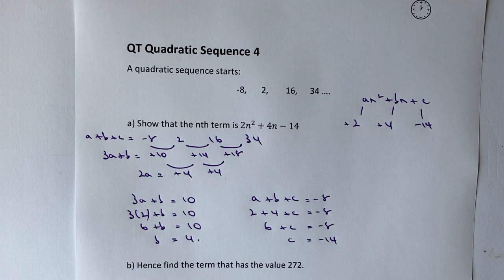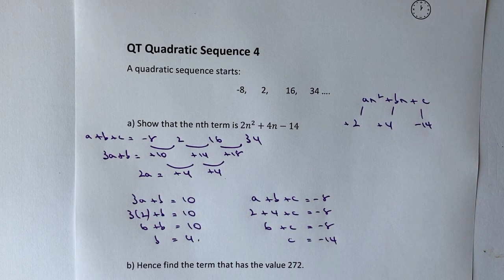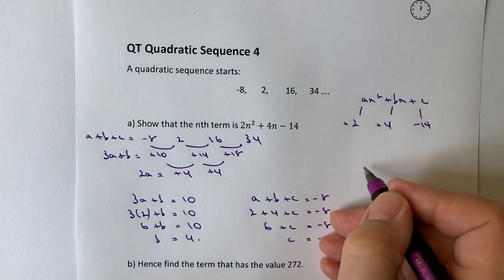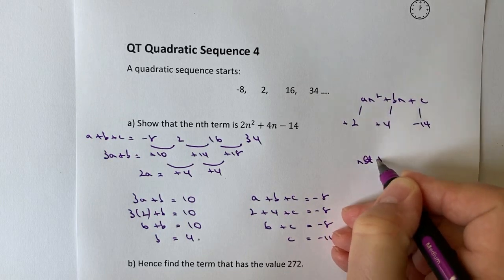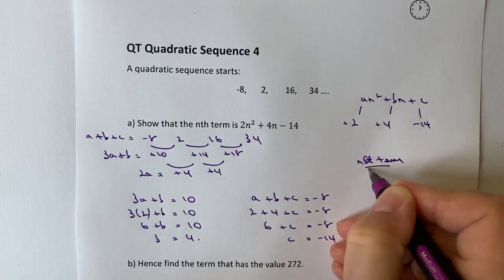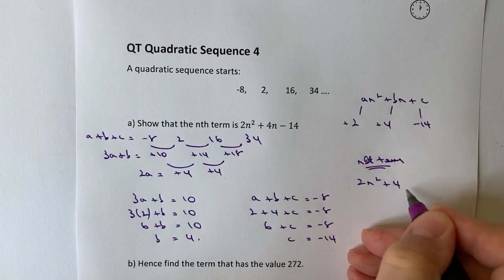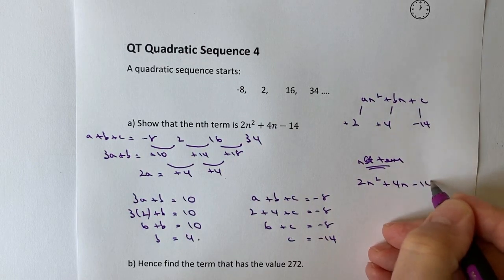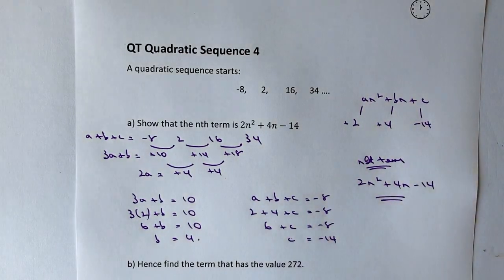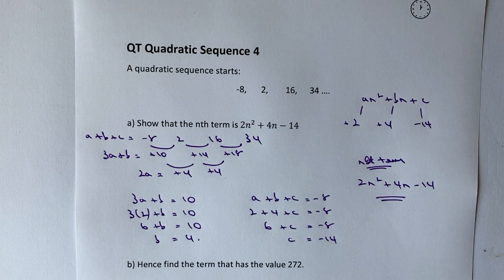So now I've got minus 14 as my value. So it means I can put everything together in the quadratic form, and I can say that the nth term is going to be 2n² plus 4n minus 14, and that would be the answer to this particular question.